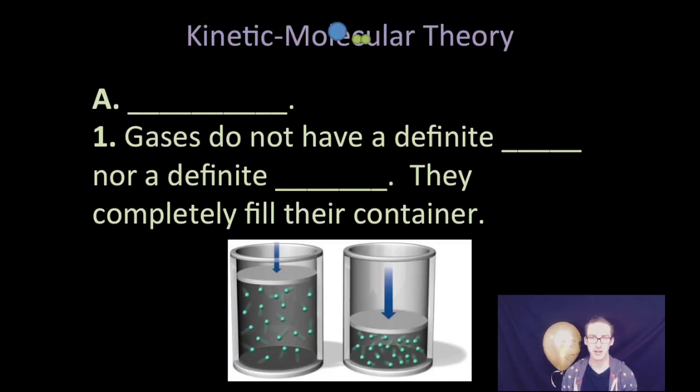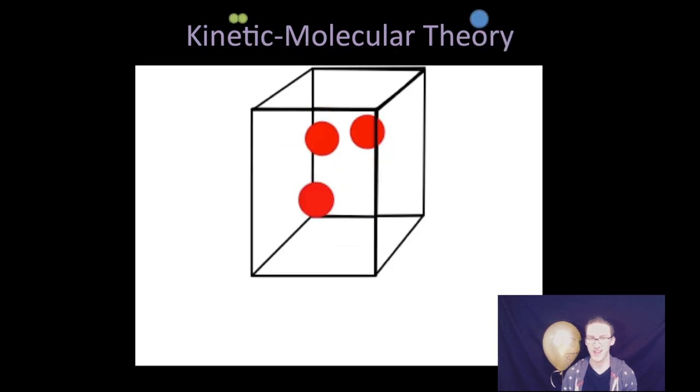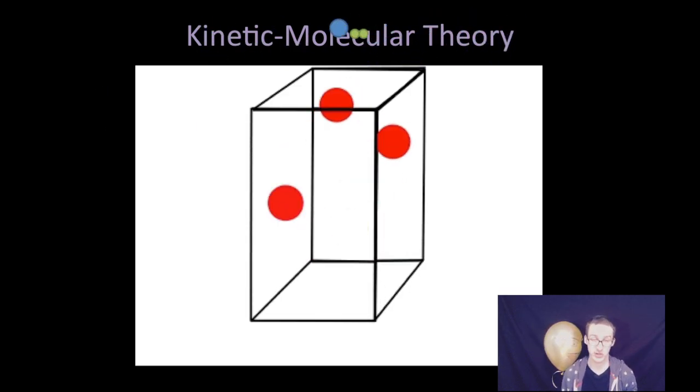So, those things said, kinetic molecular theory allows us to explain a lot of behaviors of gases. One, the first thing it explains for us is expansion of gases. Gases do not have a definite shape, nor do they have a definite volume. They completely fill their container. And so, as your container expands, so does your gas.